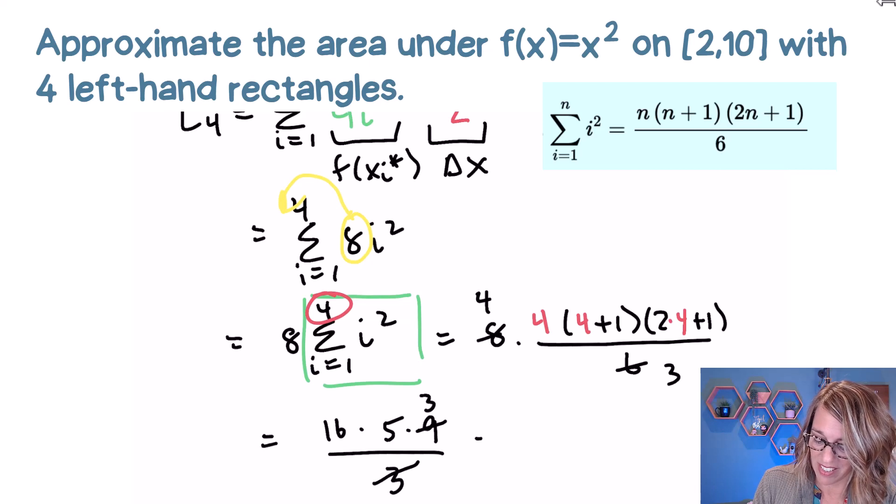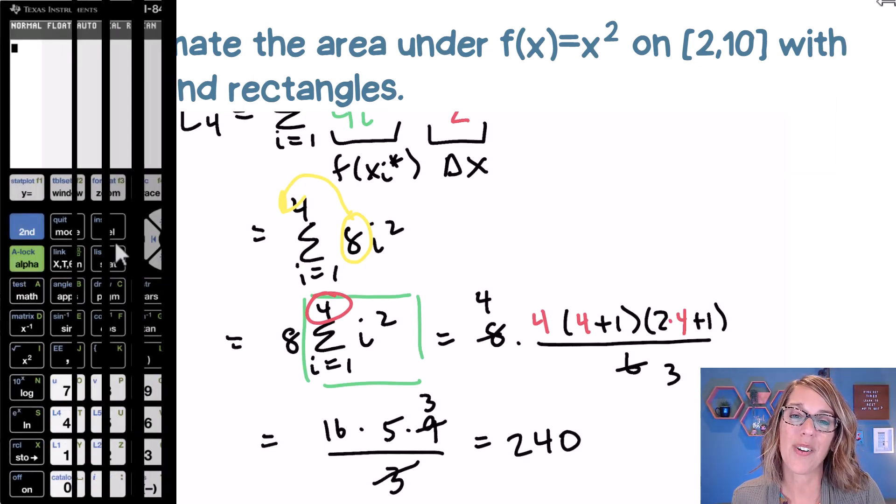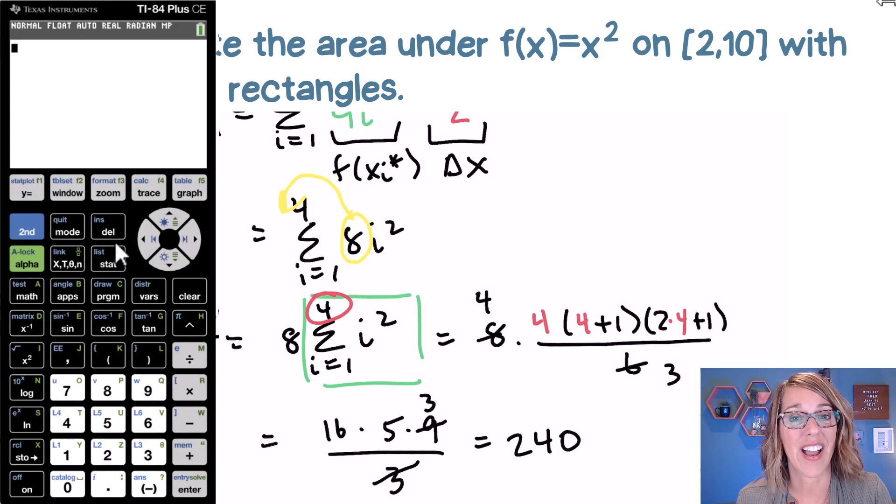I can cancel those threes. And I've got 16 times 15, which happens to be 240. And I promised that I would show you also how to do this on your calculator.